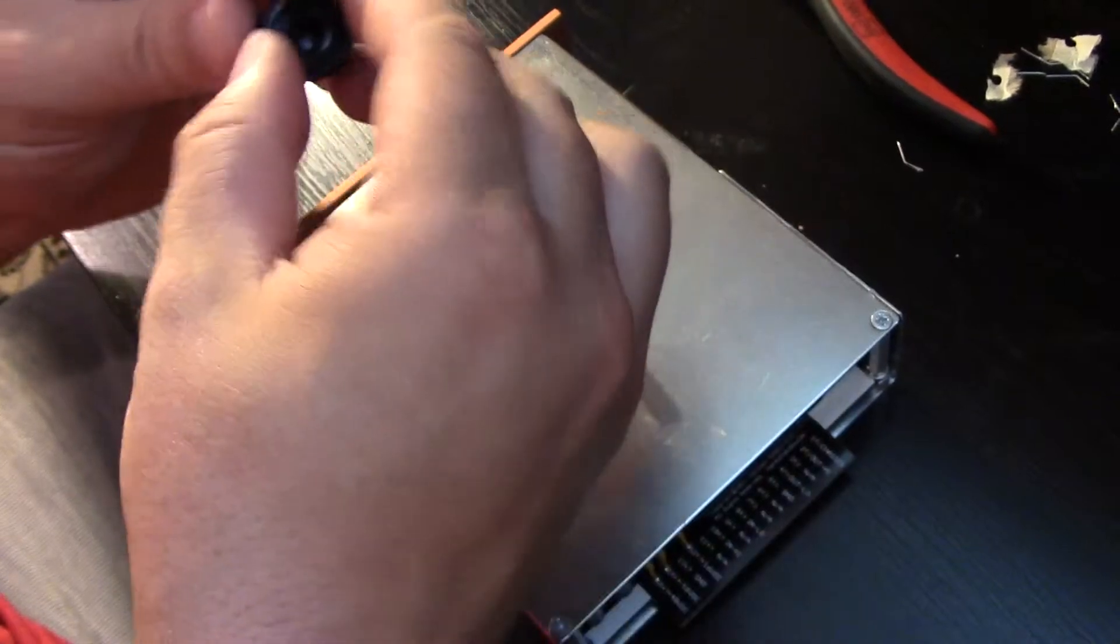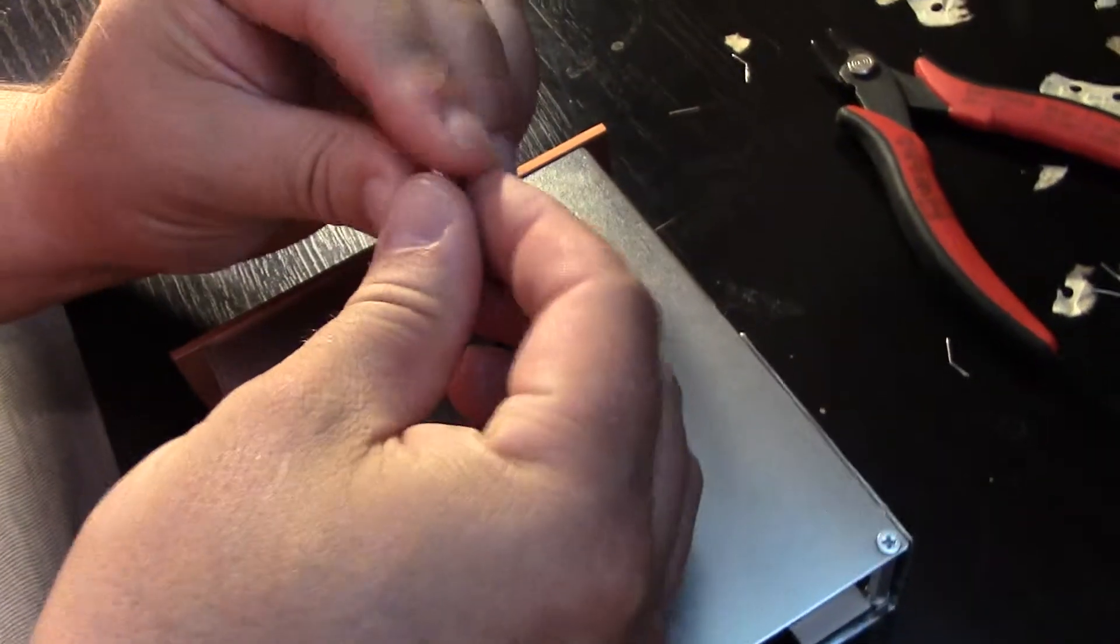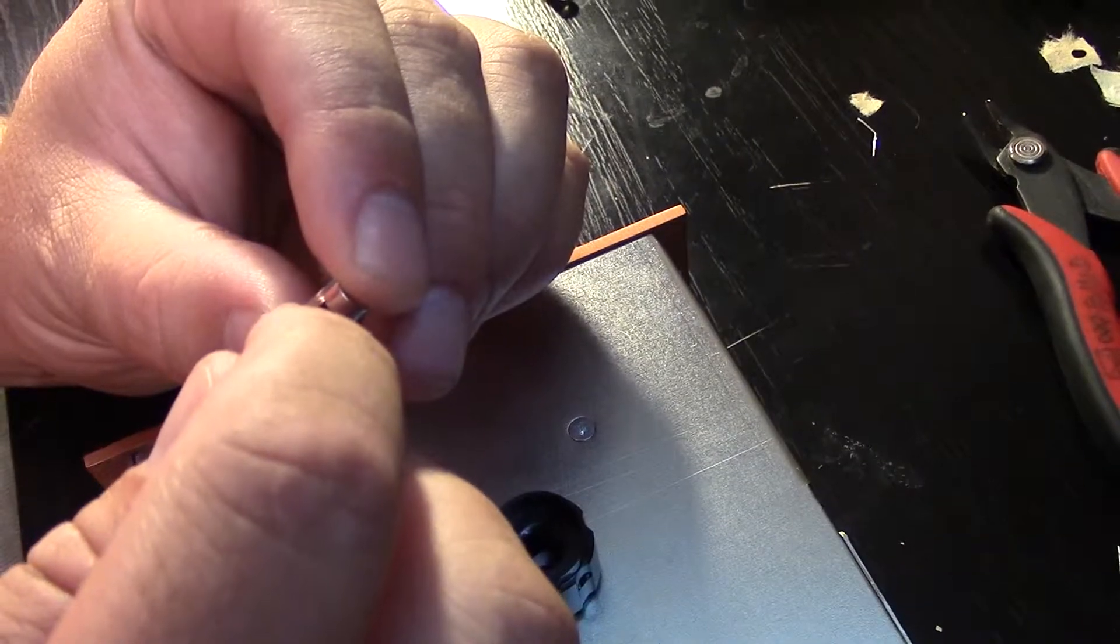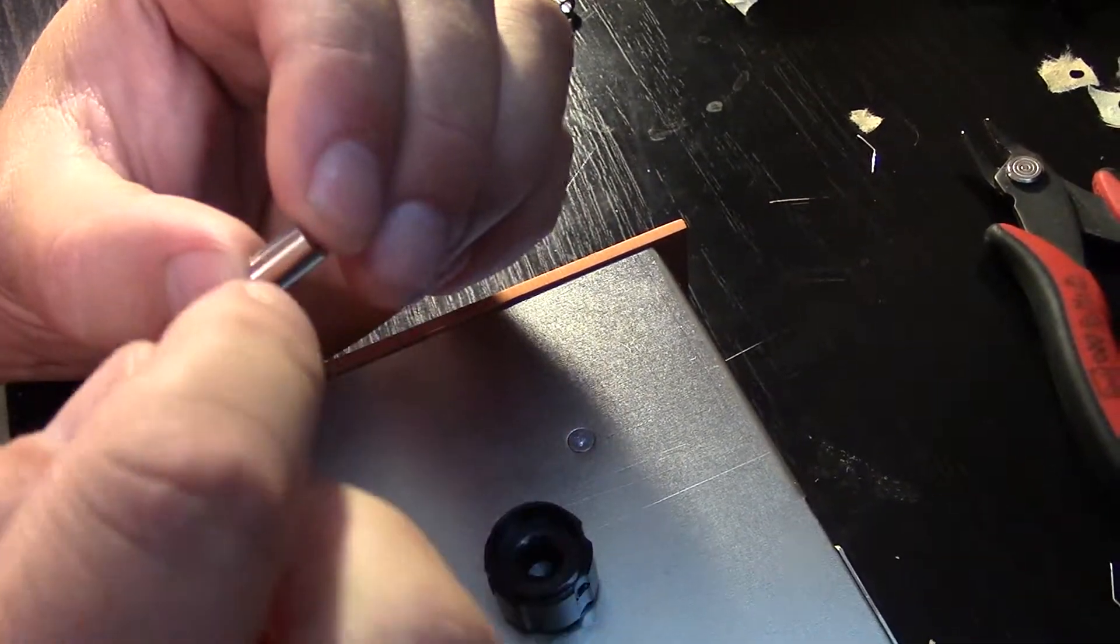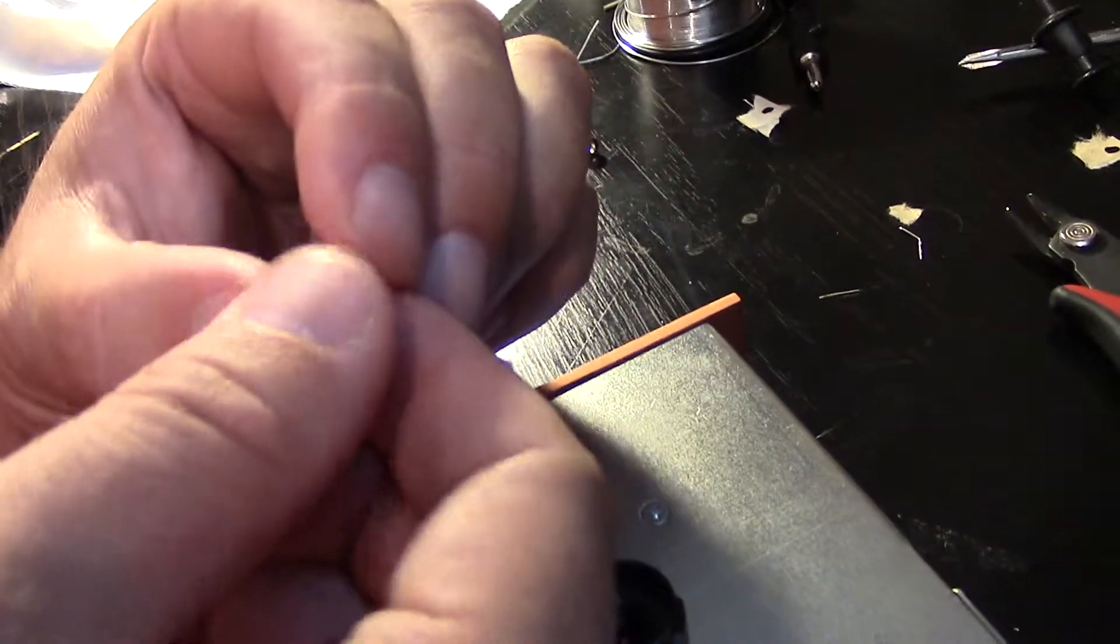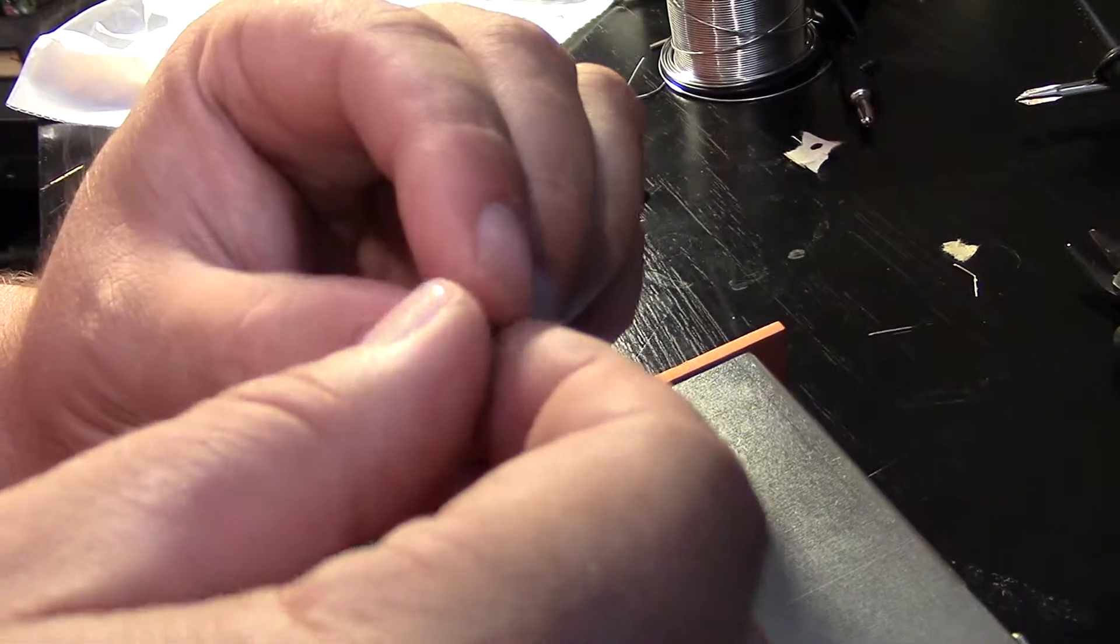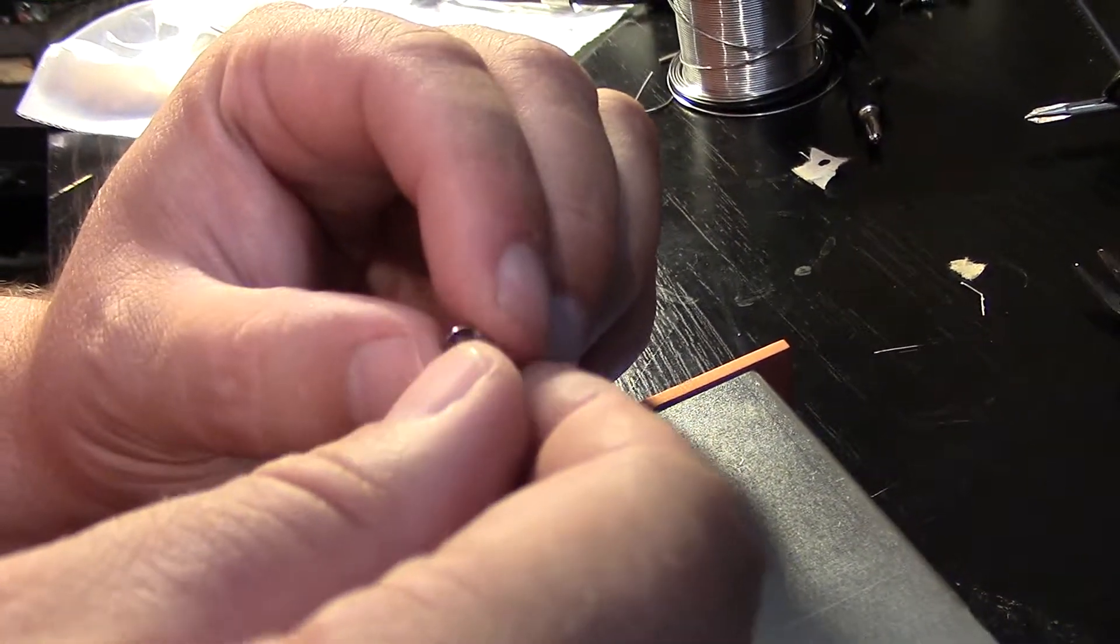So essentially what you're trying to do here is there are two set screws on the knob. You're trying to get one set screw to go through this shaft adapter, through this slot and attach to the shaft of the gray hill. You want the other set screw to attach to the solid side of the shaft adapter. So basically to make the connection secure you need a set screw on the gray hill shaft and one on the shaft adapter.